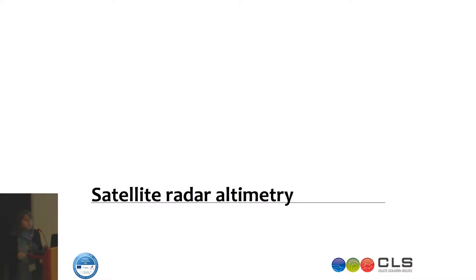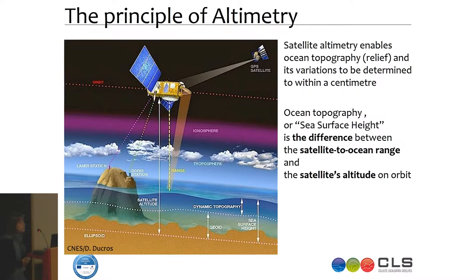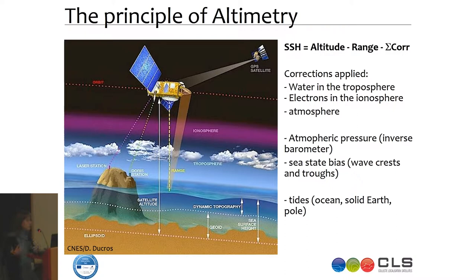Just a few words about satellite radar altimetry. The principle is that we measure the distance between the satellite and the surface using a radar wave. We also have a very precise way of determining the altitude of the satellite, and by subtracting both we reach the sea surface height. In altimetry, sea surface height is measured with respect to a reference ellipsoid. Sometimes you see SSH used for what we call dynamic topography, which can be misleading — we should say sea surface height with respect to a reference.